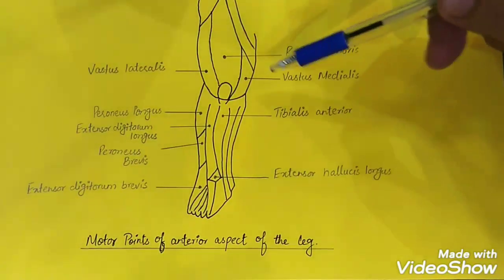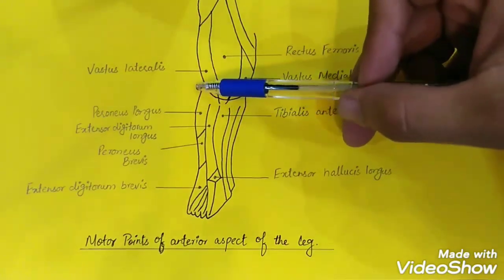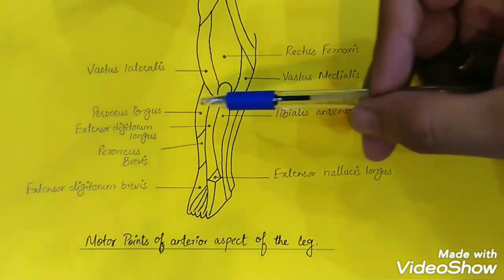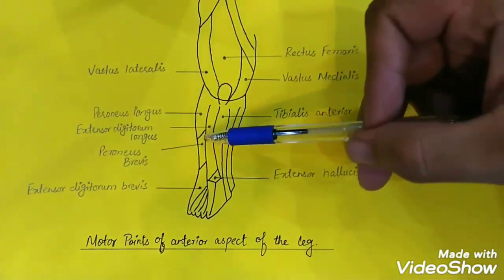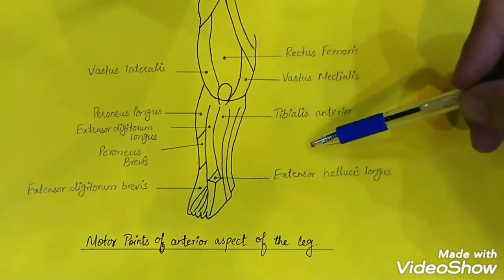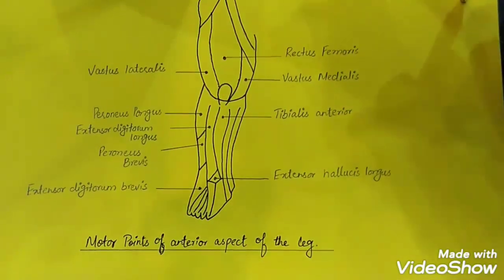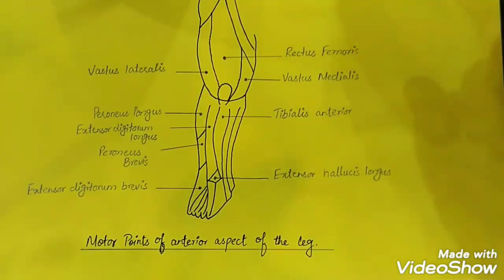To recap, the motor points of the thigh are the rectus femoris, vastus lateralis, and vastus medialis. For the leg: tibialis anterior, peroneus longus, extensor digitorum longus, peroneus brevis, extensor digitorum brevis, and extensor hallucis longus. I have told you about the two definitions of the motor point — the medical definition and the electrophysiological definition.